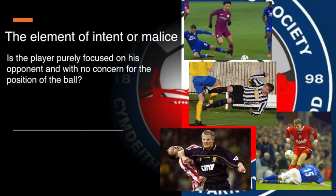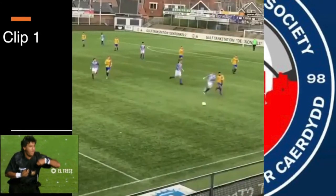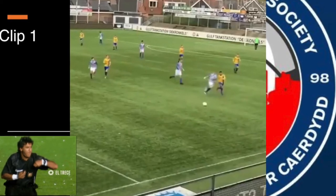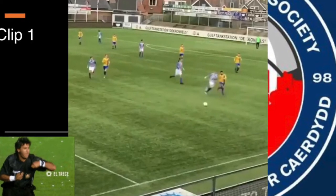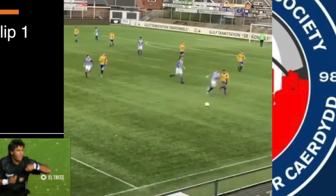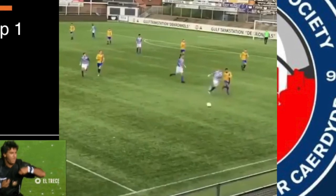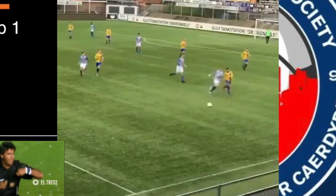Intent or malice is difficult to attribute or define because the referee is not able to read minds. However, the referee can assess body language to determine a player's intent on injuring or hurting a player in a challenge. To put the theory into practice, here are a number of clips in which I'll add a comment when necessary on the position of the referee, game management, and the correct sanction. Most of the clips were taken using a mobile phone, which explains the quality, but at least it gives that grassroots feel to the actual game.